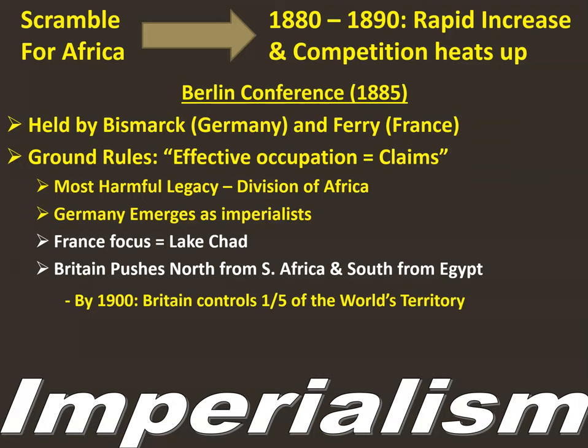By 1900, with the Berlin Conference and the African territories they gobble up, Britain is going to control one-fifth of the world's territory — 20% of the empires covering the world, which is a lot. This ties back to the quote from the last lecture about the sun never setting on the British Empire.